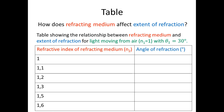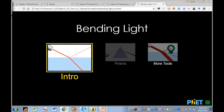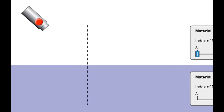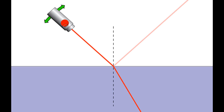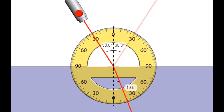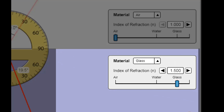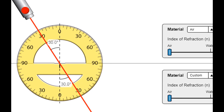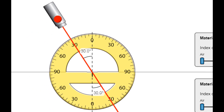We'll collect data using the bending light simulation. Remember, in all cases we control the incident medium as air and the angle of incidence at 30 degrees. We turn on the light, show the angles, confirm 30 degrees as our angle of incidence, and position the protractor correctly. What we are varying is the material of the refracting medium — specifically its index of refraction. Our first measurement uses a refractive index of 1.